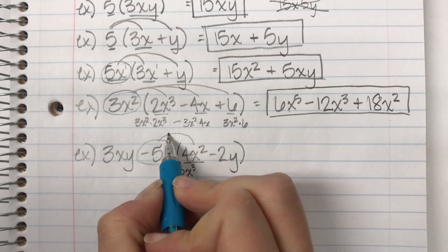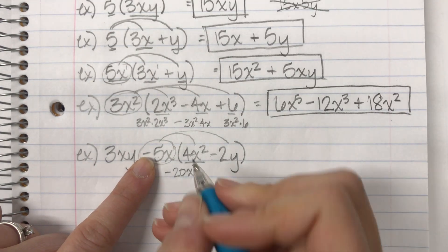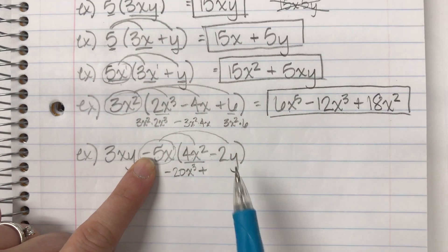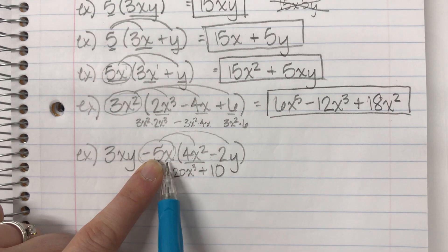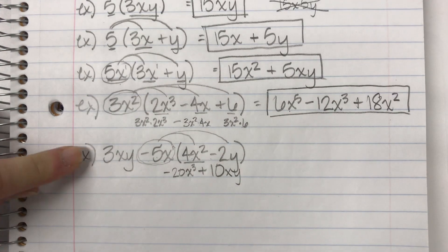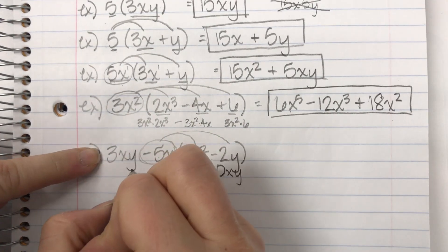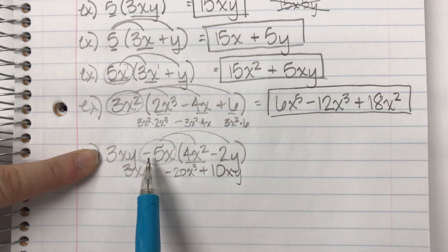Now, when I multiply by the back one, I have a negative times the negative, which is going to give me a positive. Multiply coefficients gives me 10, and then xy. But don't forget about this little guy that's hanging out front. So, I'm just going to pull him down, not do anything with him yet. So, now I've distributed.